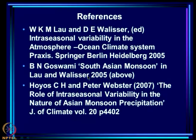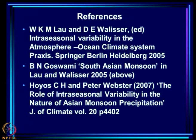What has been presented here is a flavor of the kind of processes that may be important in the two major features of intra-seasonal variation over the Indian region: active-weak spell fluctuations and northward propagation. Thank you.